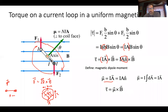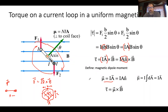We were giving you a justification for this thing called a magnetic dipole moment, and it came from this thing, which is an electric motor, where we were running current through it. The force on either side gave us a torque.